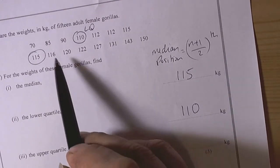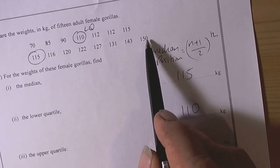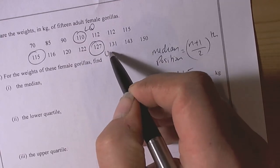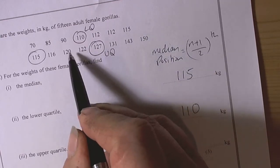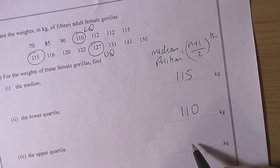And the upper quartile value, well if the lower quartile was a 4th from the beginning, then the upper quartile would be a 4th from the back, so 1, 2, 3, 4, and we can see that's correct because there are 3 data points below that value and 3 data points above it, so 127.